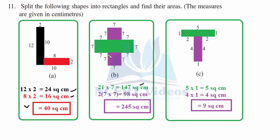For the other region of the second part, since both sides are similar we find one and multiply by 2: 7 into 7 is 49, into 2 gives 98 square centimeter. Adding 147 plus 98 gives 245 square centimeter for the whole figure. For the third part, shaped like the letter T: 5 into 1 is 5 square centimeter, and 4 into 1 is 4 square centimeter. Adding gives 9 square centimeter.